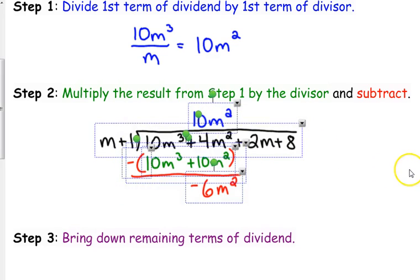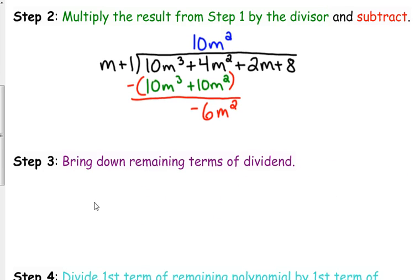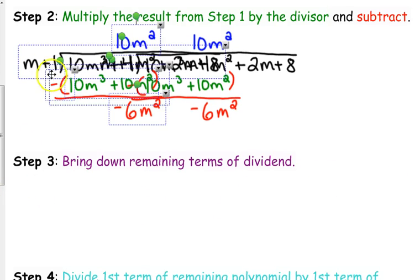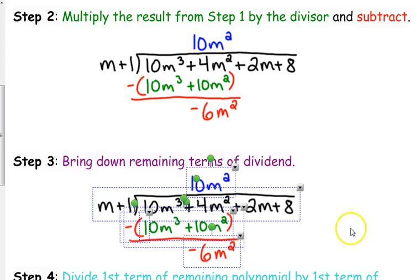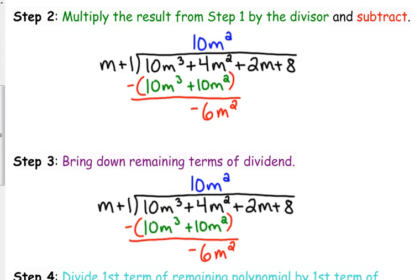Then, just like with regular division, you're going to bring down the remaining terms of the dividend. So the 2m and the plus 8, they need to come down to join the negative 6m².